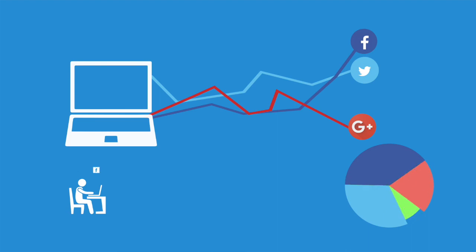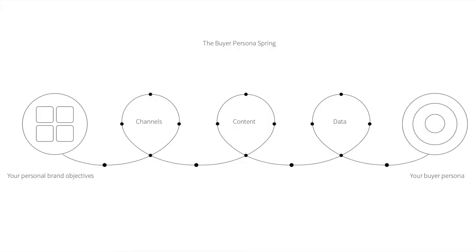Ultimately, if the prime ambition of your personal branding online is to get a job, it's about how many interviews or job interactions you've had as a consequence of your personal branding online. The Buyer Persona Spring is a digital marketing concept that gives you a structure for long-term personal brand online communication. On one side you have your business objectives; on the other, your buyer personas. You need to think about the content to create, the channels to populate, and how to measure success. The five key ingredients of the Buyer Persona Spring are: business objective, buyer persona, content, channels, and data.